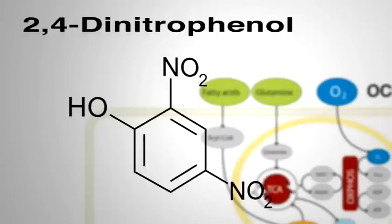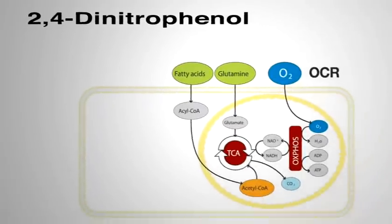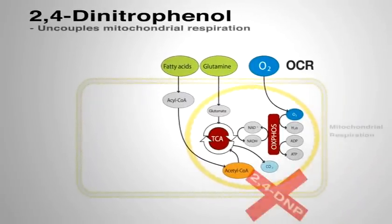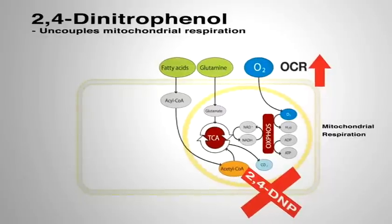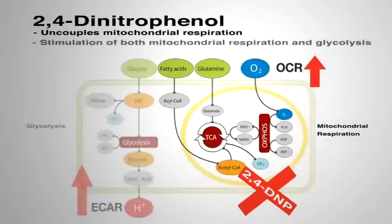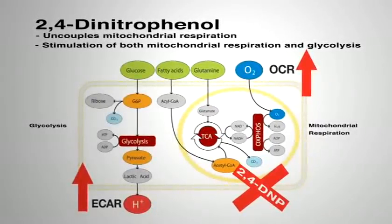The first modulator used was 2,4-dinitrophenol. 2,4-DNP uncouples mitochondrial respiration from ATP synthesis, leading to a rapid acceleration of oxygen consumption without generation of ATP and stimulation of both mitochondrial respiration and glycolysis.